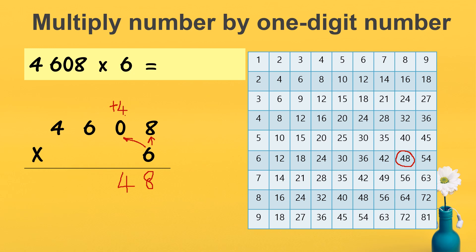Then continue — 6 times 6. Go back to the table again. 6 and 6, so 6 times 6. I circle this number: 36. Now, 36 — I have to write 6 here, and the 3 I regroup at the thousands place.